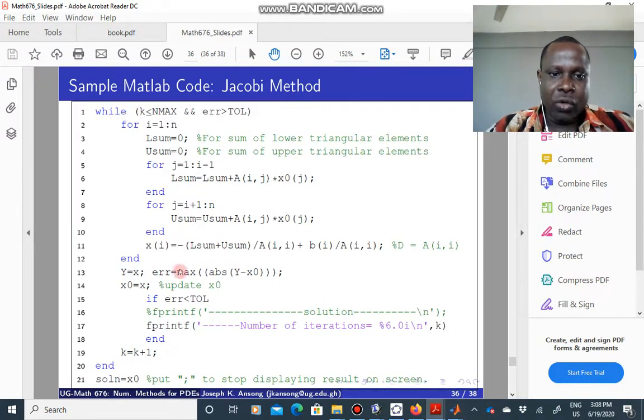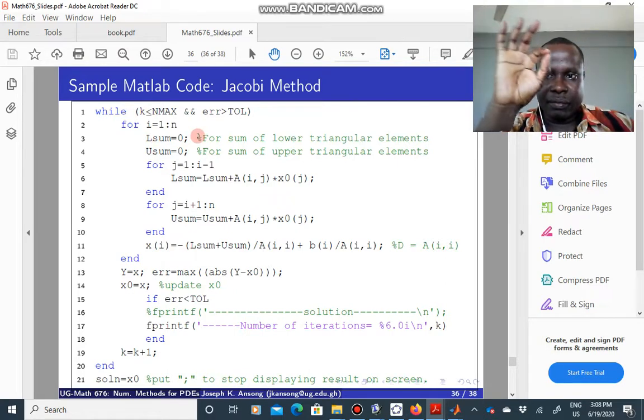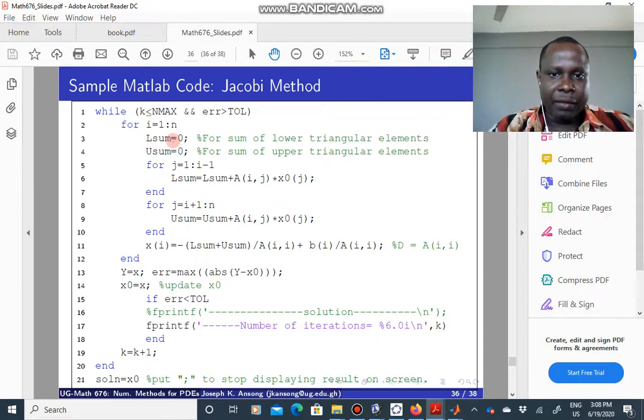If you want, let's say, 6 decimal places of accuracy, you can change that. And then this is the main code for doing the Jacobi. So take a look at it and study it. L here is basically summing, if you take any equation in the system, this one is summing the lower triangular terms. The U sum is for the upper triangular terms.